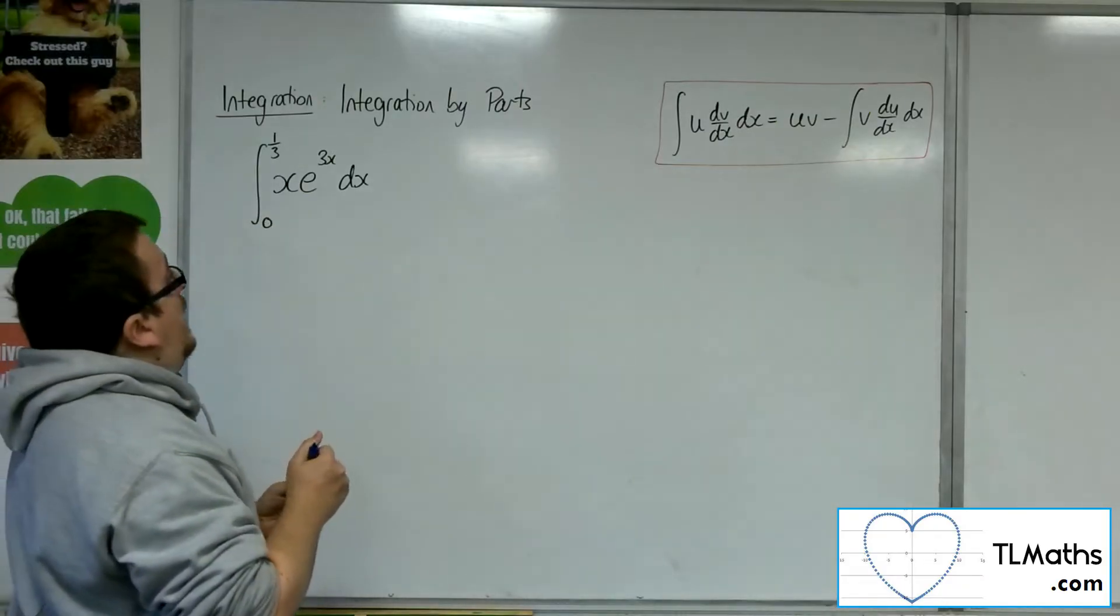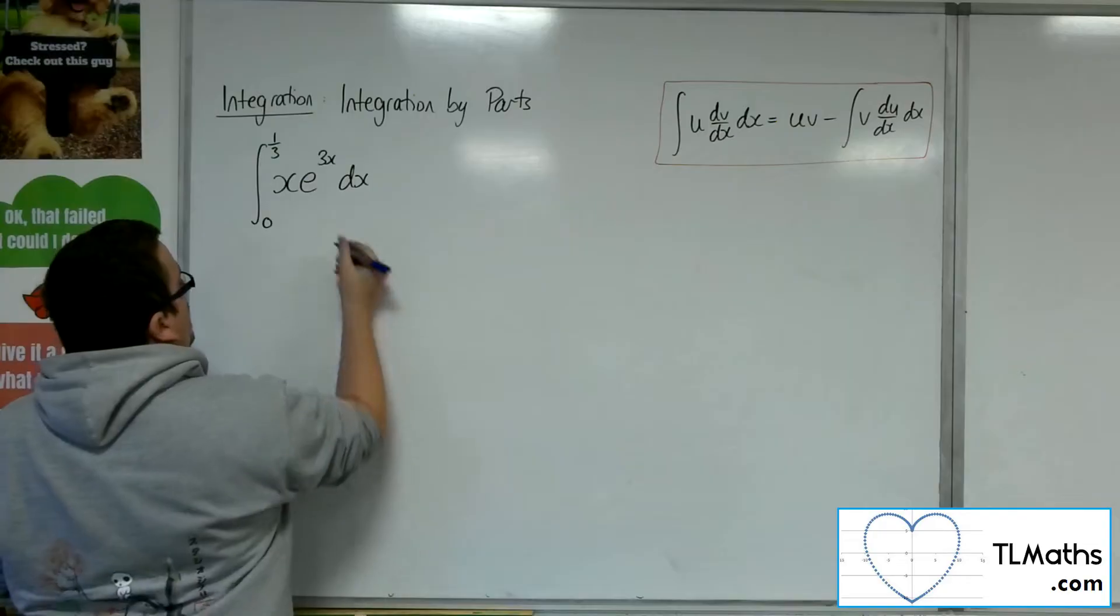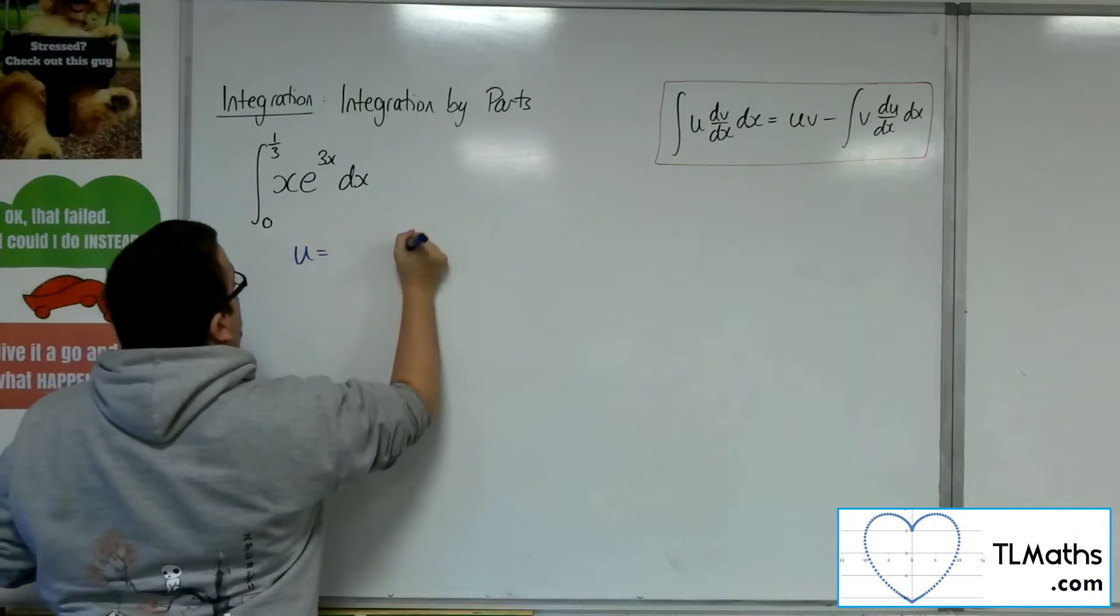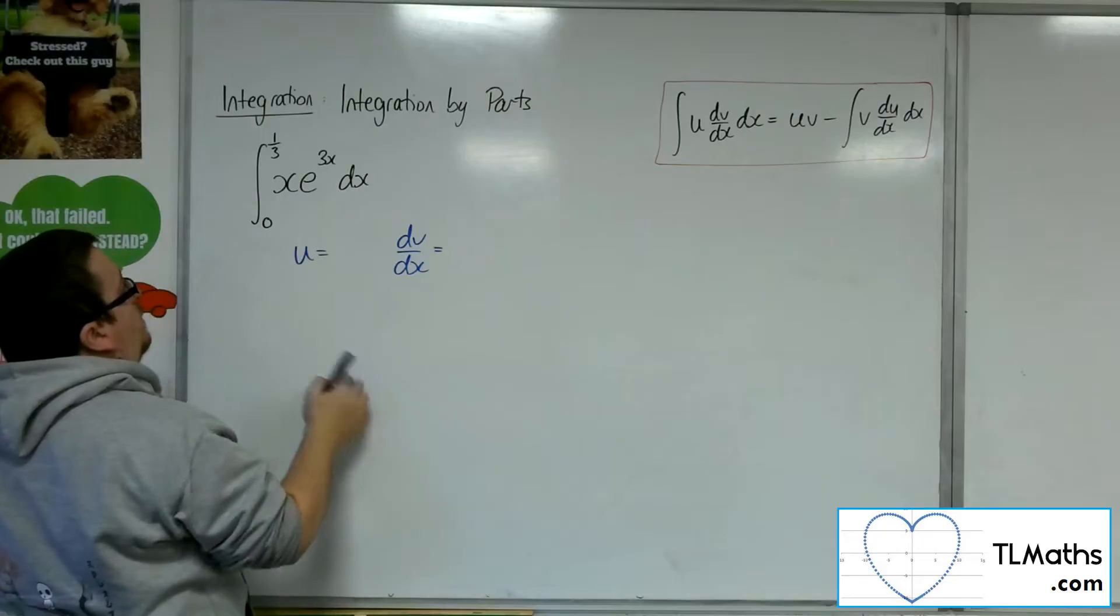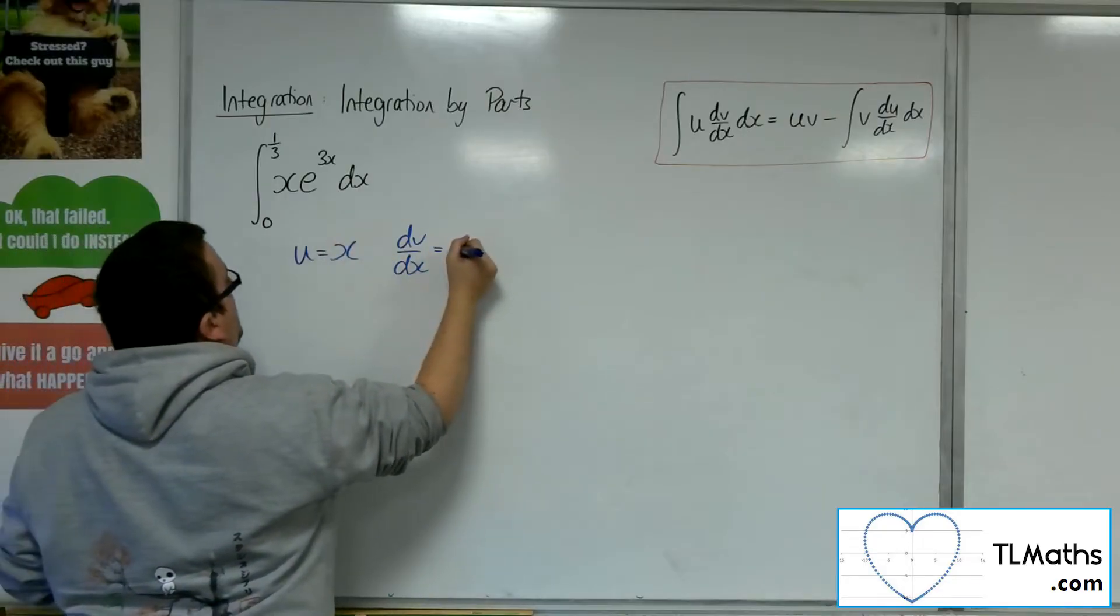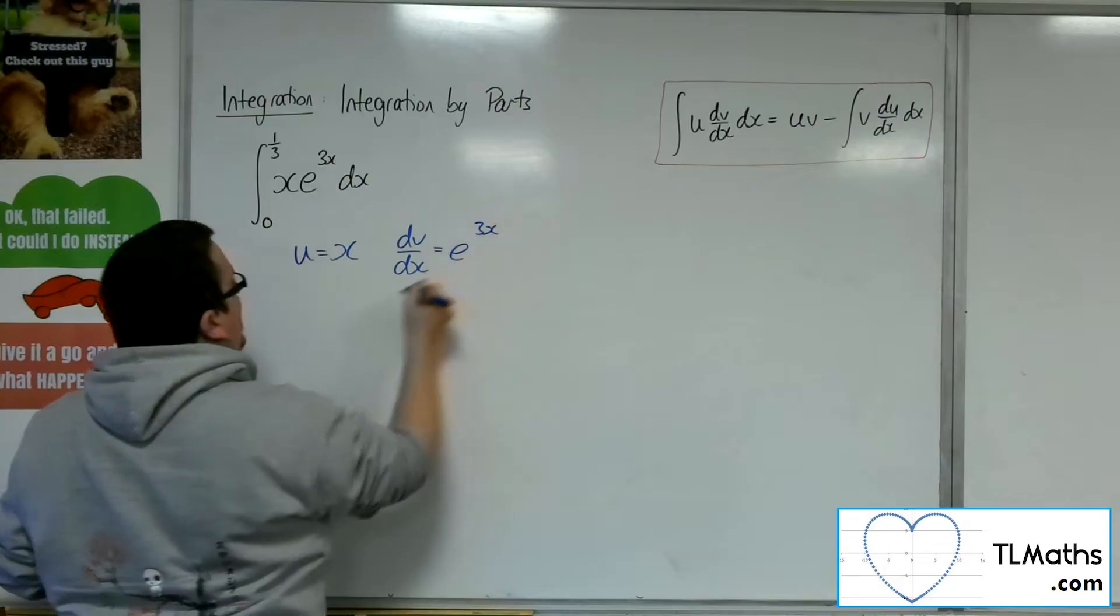With this, we want to find u and dv/dx. It works out like normal, and u is going to be x, dv/dx is e to the 3x using the LIATE rule.